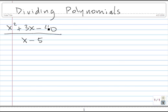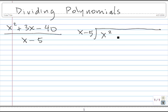To divide x squared plus 3x minus 40 by x minus 5, we start by writing down x minus 5 using regular division notation — x minus 5 goes on the outside, and x squared plus 3x minus 40 goes on the inside. We make sure the numerator and divisor are both in descending order of power, and since they both are, we can proceed and divide.